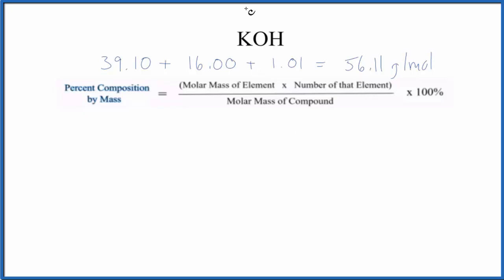So let's find the percent composition by mass for the K here in KOH. For the potassium, on the periodic table, potassium is 39.10 in the units grams per mole.